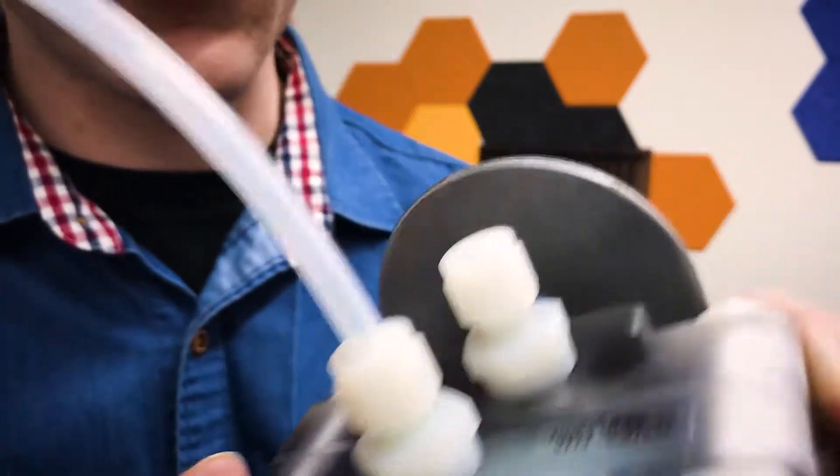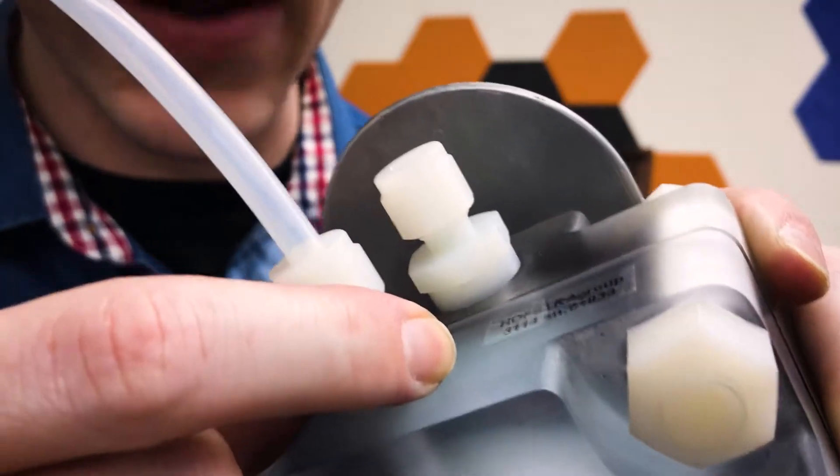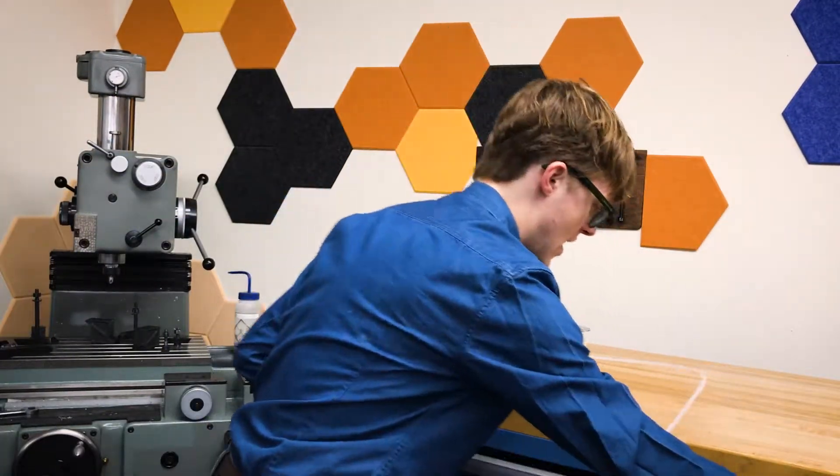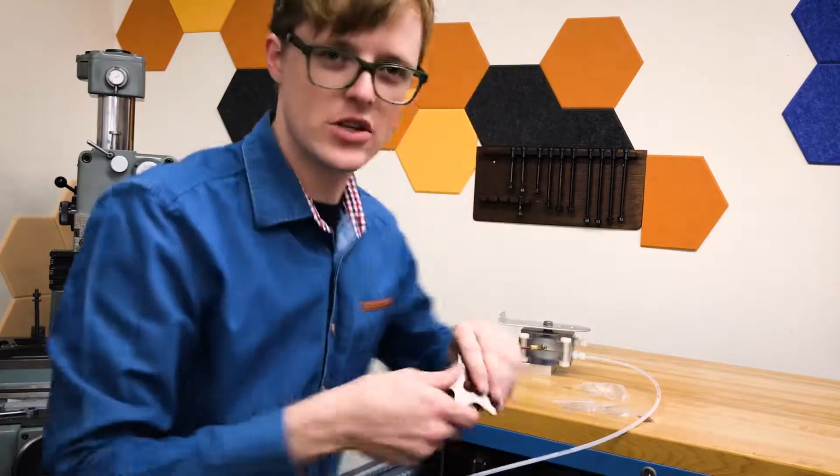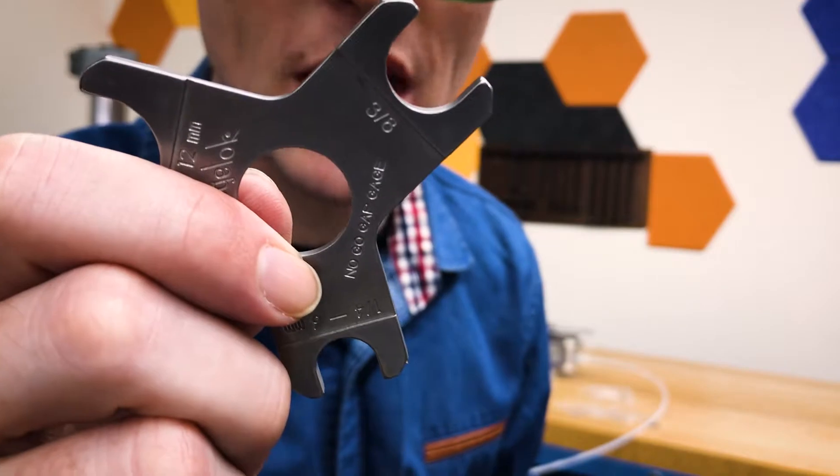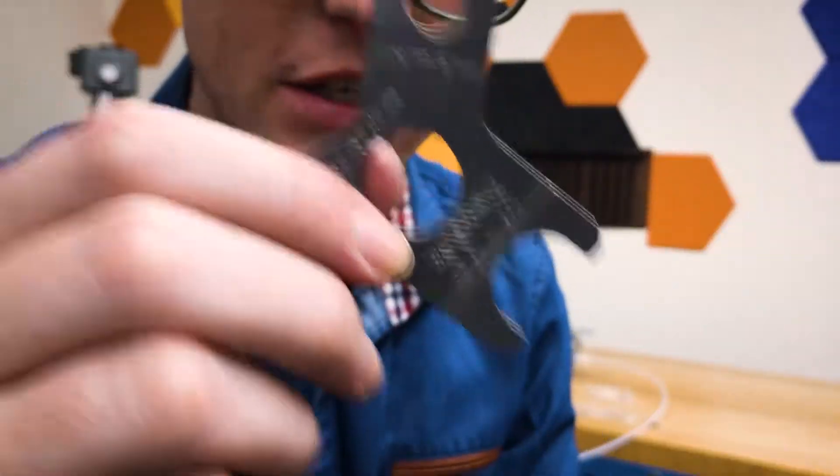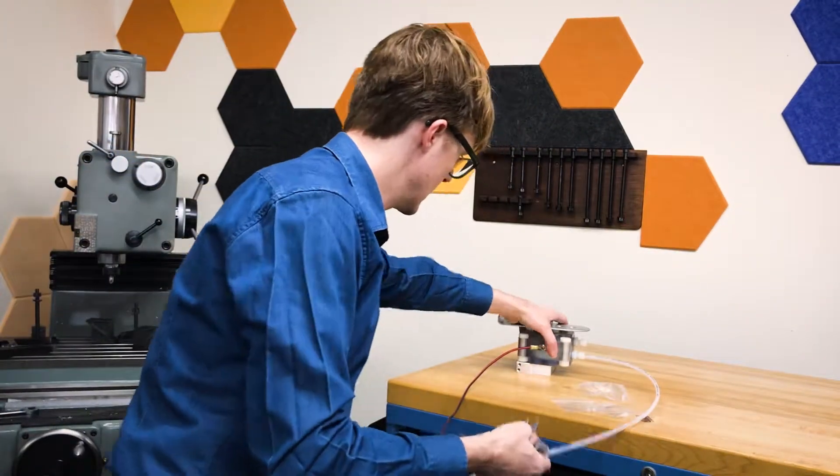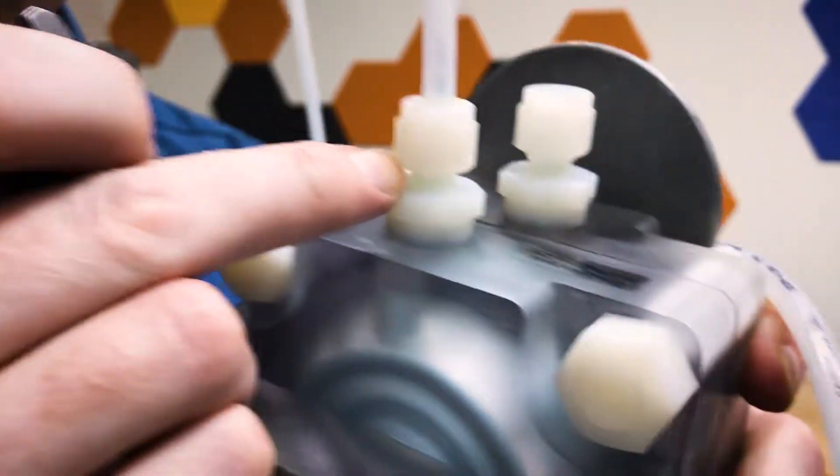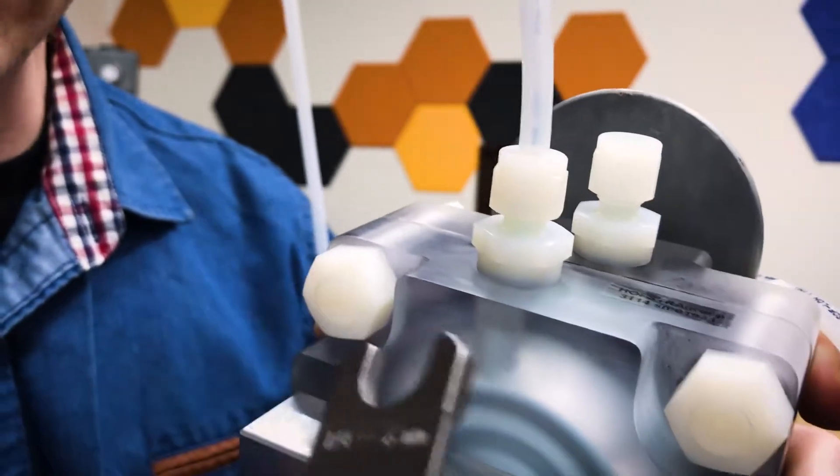And I also don't want to over-tighten it and maybe break this fitting here. Now Swagelok makes a gauge just for this, it's called a no-go gap gauge. They make them for every different size of tubing. And like the name sounds, you have the fitting correctly installed when the gauge will no longer go into the gap here. You can see it goes into the gap easily.